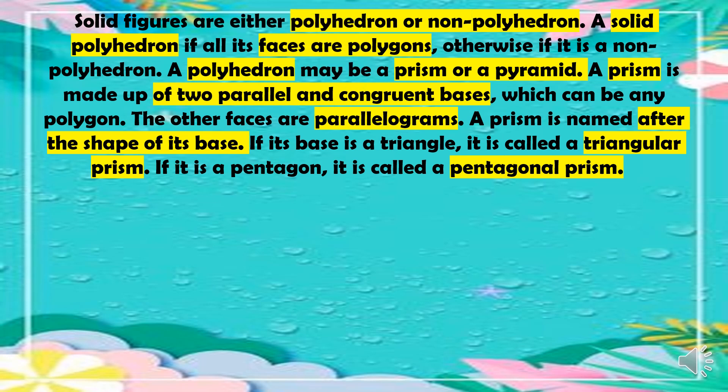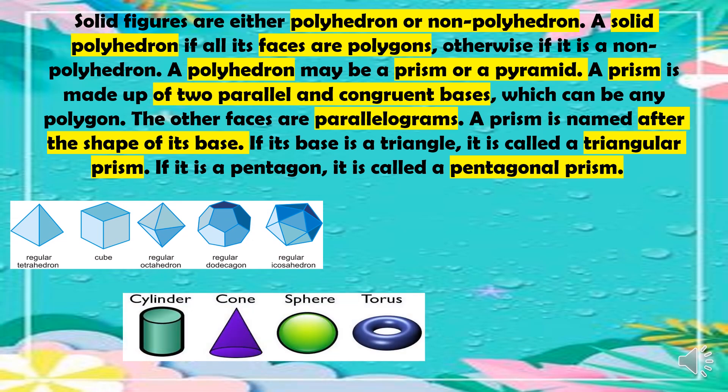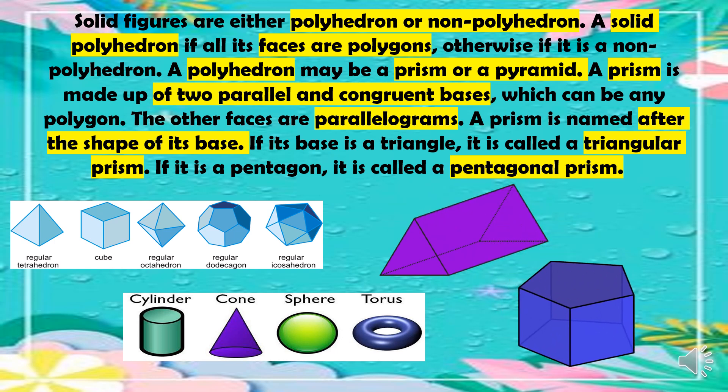Solid figures are either polyhedron or non-polyhedron. A solid is a polyhedron if all its faces are polygons; otherwise, it is non-polyhedron. A polyhedron may be a prism or a pyramid. A prism is made up of two parallel and congruent bases, which can be any polygon, and the other faces are parallelograms. A prism is named after the shape of its base — for example, triangular prism or pentagonal prism.